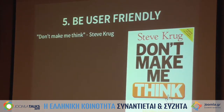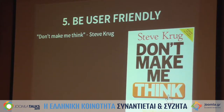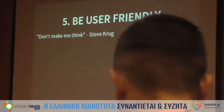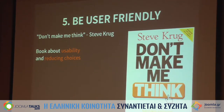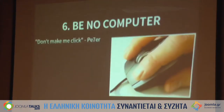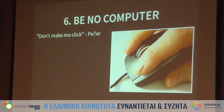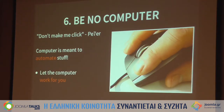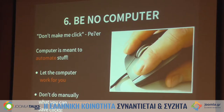Then there's a chapter called Be User Friendly. This book is about usability and reducing choices — you could remove what you don't need. And the last chapter I made myself: Don't Make Me Click. Computers are there to automate your stuff. If you're doing things a lot, ask how you can automate it. Let the computer work for you instead of you working for the computer — don't do everything manually, but try to do things automatically without a lot of clicking.